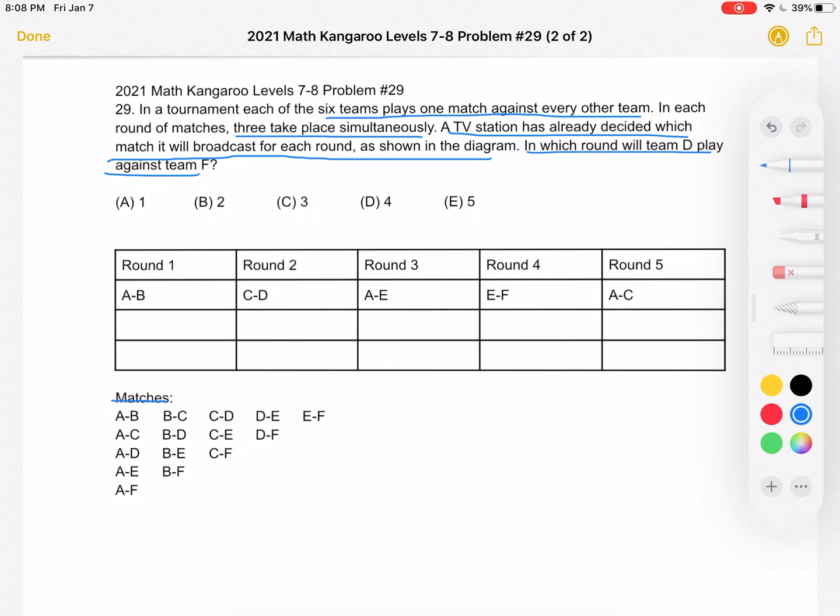So let's try to figure out where A,D and A,F are, for example. So if we start with A,D, we know that A,D cannot go in round one because A is already playing there. And these matches, again, are happening at the same time in each round. So A can't be playing two matches at the same time. It cannot be in round two either because we have D in A,D, and D is already playing in round two. A is already playing in round three, and A is already playing in round five. So this means that the match A,D must occur in round four.